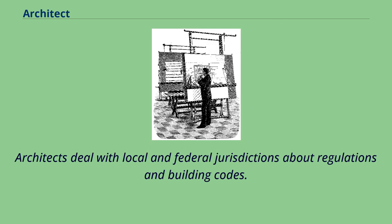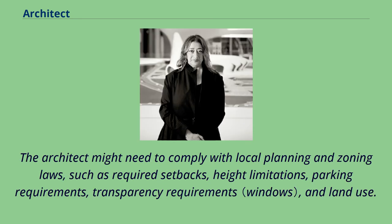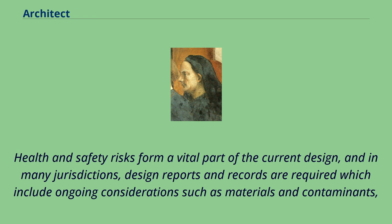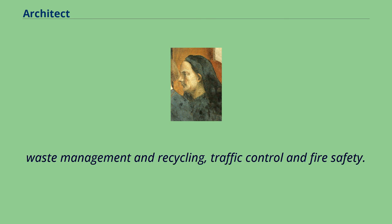Architects deal with local and federal jurisdictions about regulations and building codes. The architect might need to comply with local planning and zoning laws, such as required setbacks, height limitations, parking requirements, transparency requirements, and land use. Some established jurisdictions require adherence to design and historic preservation guidelines. Health and safety risks form a vital part of the current design, and in many jurisdictions, design reports and records are required which include ongoing considerations such as materials and contaminants, waste management and recycling, traffic control and fire safety.